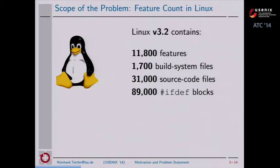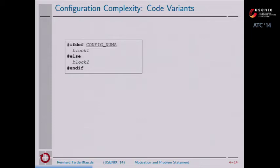While these numbers sound impressive by themselves, I'd like to illustrate why this is actually a problem. All these ifdef blocks inevitably lead to alternatives in the code. If you have an ifdef block where, as a programmer, you want to say: if the user has selected non-unified memory architecture, then compile block one, otherwise compile block two — the compiler will inevitably choose exactly one of these two alternatives.